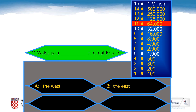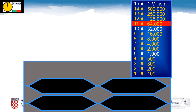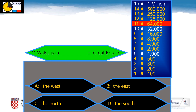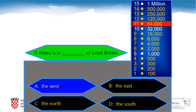Question number 11 for 64,000 points. The question is: Wales is in which direction of Great Britain? A: The West, B: The East, C: The North, D: The South. The West is the correct answer, of course. Well done.